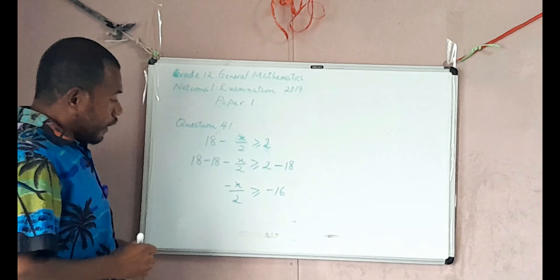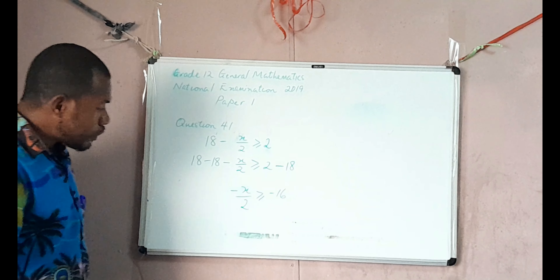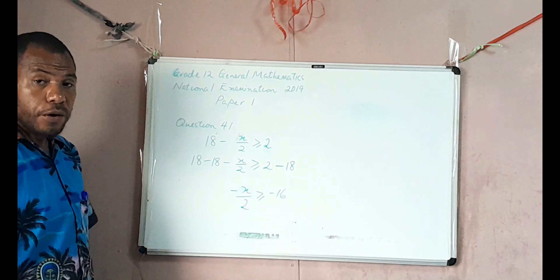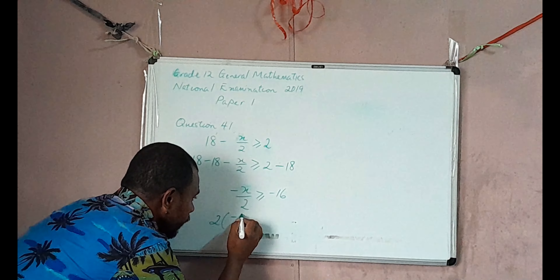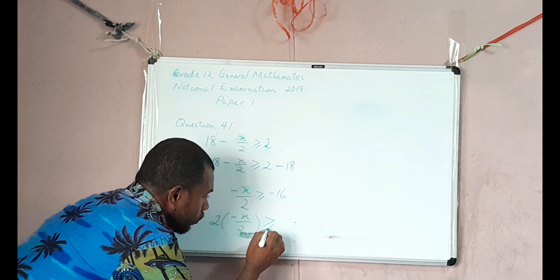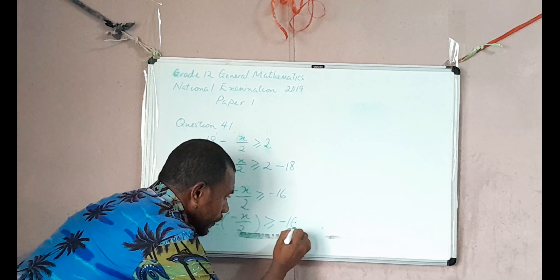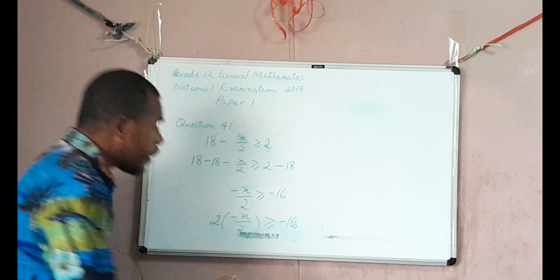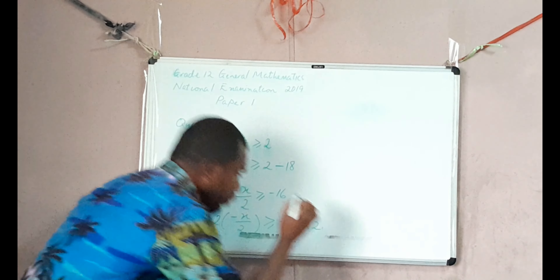The next thing to do is to get rid of the denominator 2. The only way to get rid of this denominator 2 is to take the opposite operation of division. The opposite of division is multiplication. Multiply the left hand side by 2: 2 multiplied by negative x on 2, which is greater than or equal to negative 16. Because we multiply 2 on the left hand side, we do the same to the right hand side, multiplied by 2.